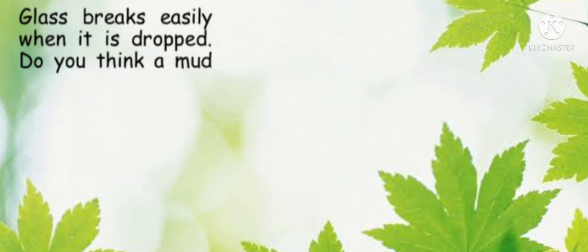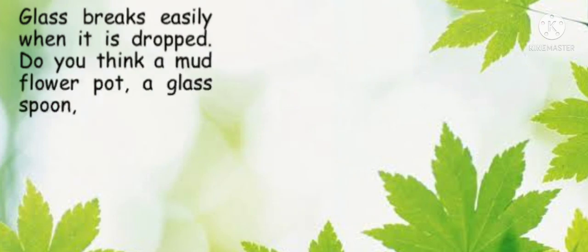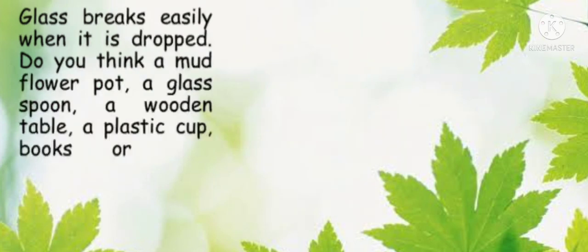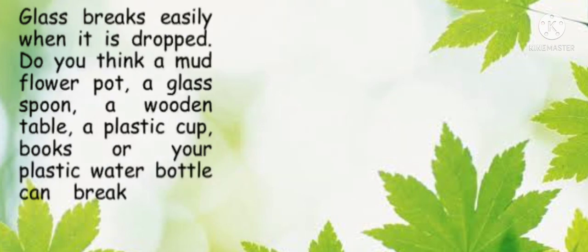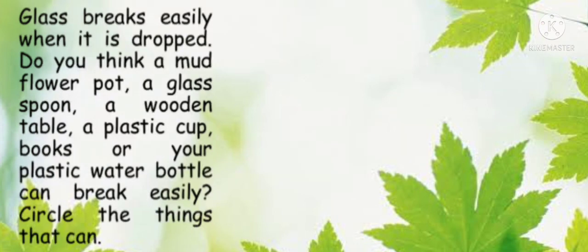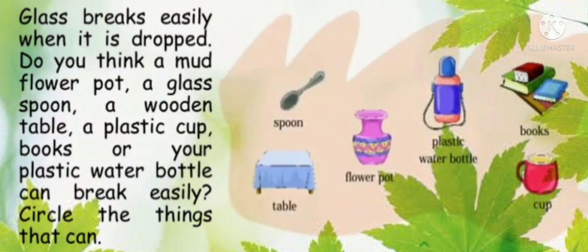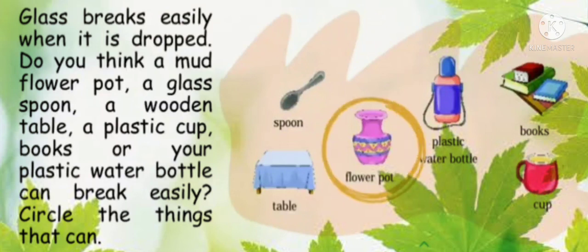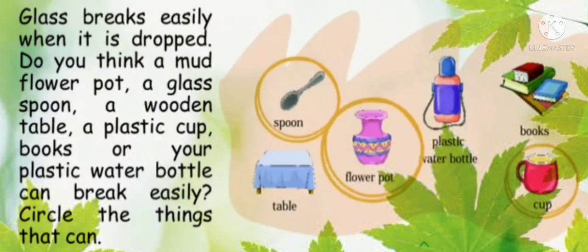Now: glass breaks easily when it is dropped. Do you think a mud flower pot, a glass spoon, a wooden table, a plastic cup, books, or your plastic water bottle can break easily? Circle the things that can't break. Among these things, which ones break easily? Flower pot breaks easily, then glass spoon, and cup. These are the things which break easily.